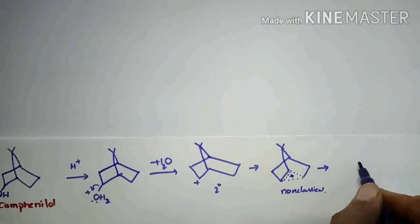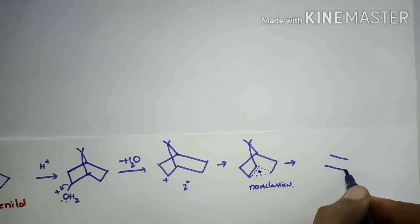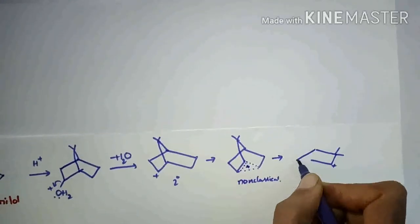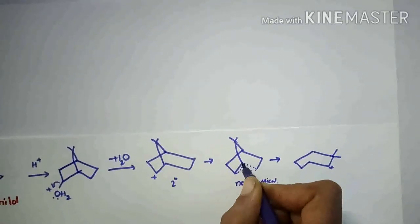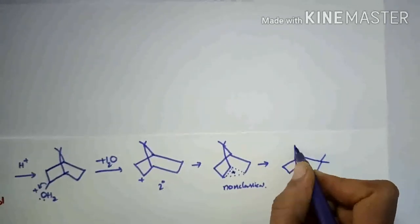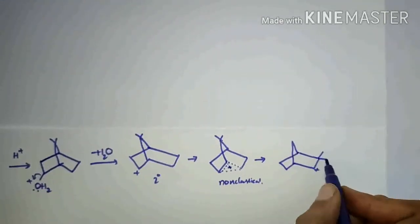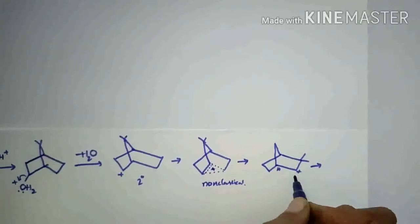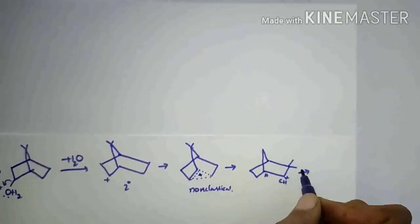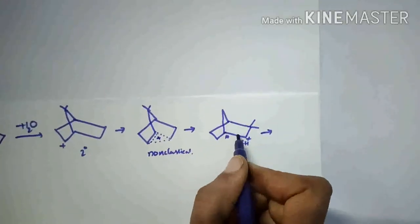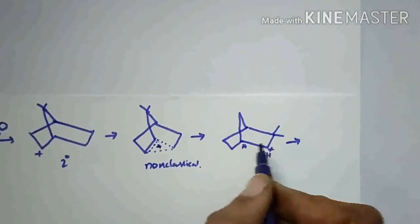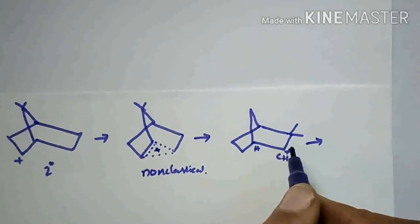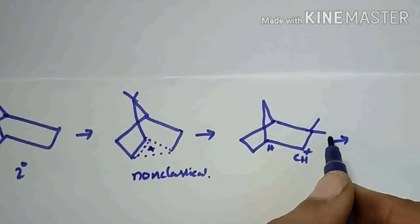So it will be rearranged. These are the bonds, and here one hydrogen and here one CH is there. If this hydrogen is deprotonated, it will form a double bond here. But it is unstable, because the carbon having a bridgehead — if it has a double bond — it will be unstable. So this CH3 will be migrated to here.